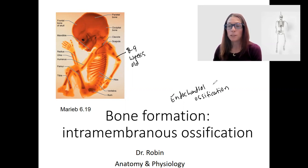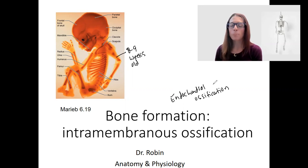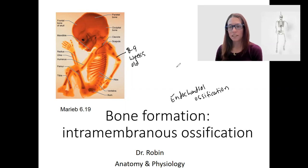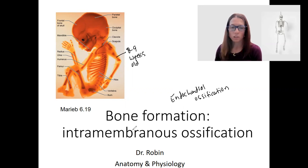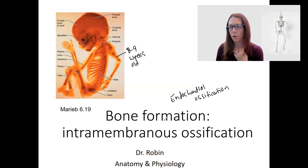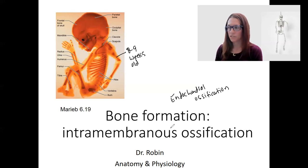Endochondral ossification uses a pre-existing cartilage model. Most of the bones use this, replacing cartilage. A few bones — the skull and the clavicle — flatter, smaller bones, are going to use intramembranous ossification.